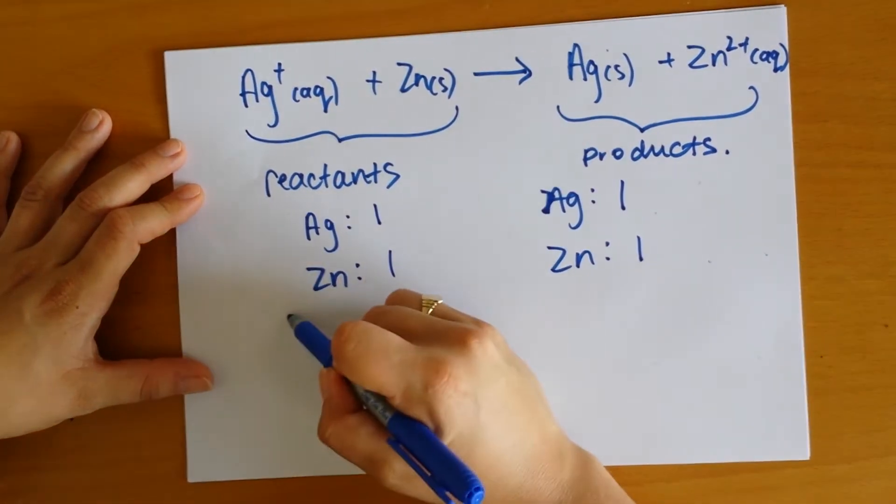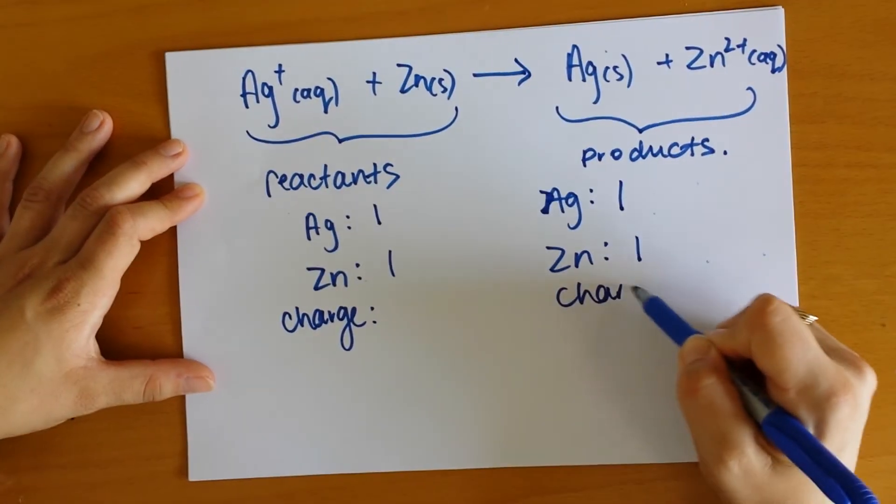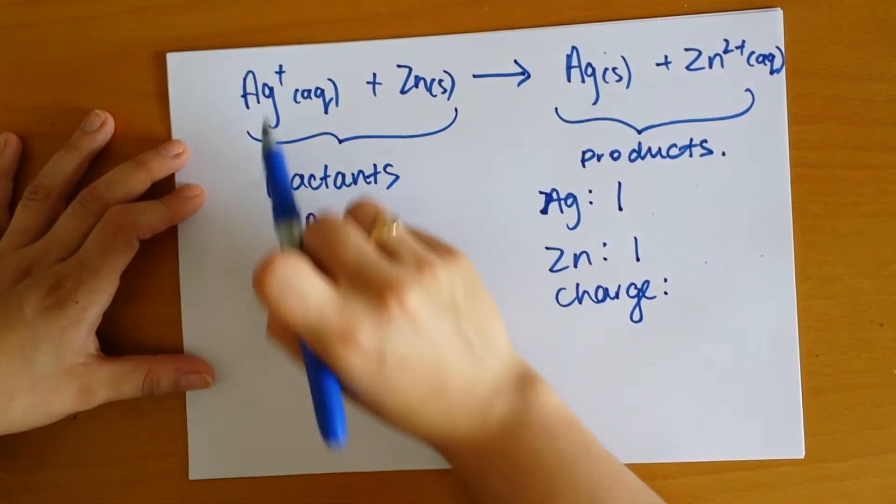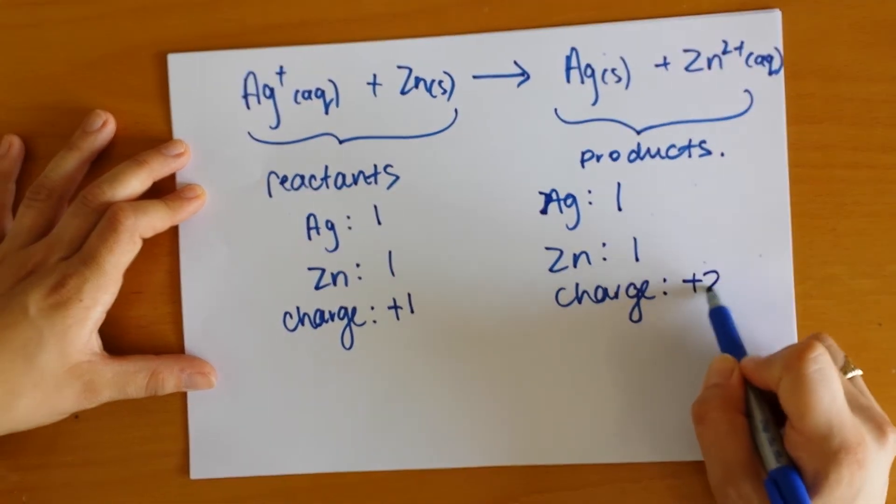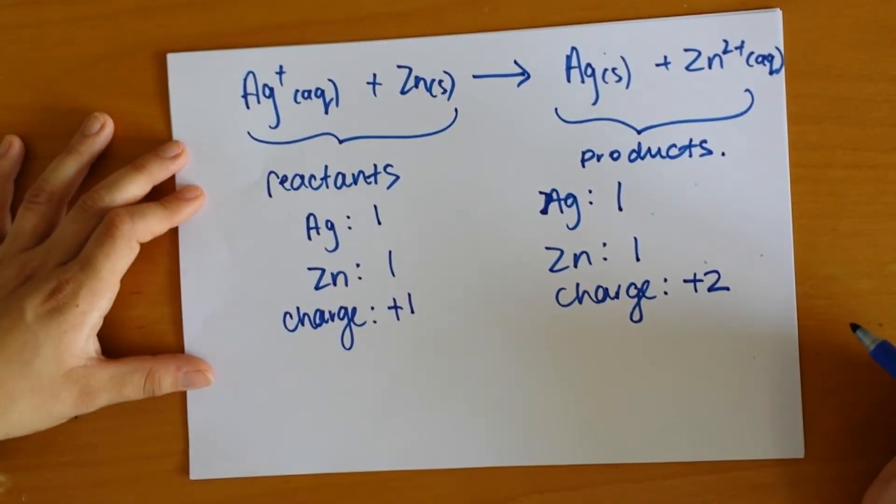But remember, we also need to take charge into account. In this case, we've got some charge to worry about - we have a +1 on this side and a +2 on this side, so our charge is not balanced.